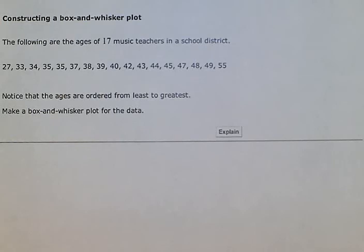27, 33, 34, 35, 35, 37, 38, 39, 40, 42, 43, 44, 45, 47, 48, 49, 55. Notice that the ages are ordered from least to greatest. Make a box and whisker plot for the data.